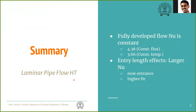To summarize laminar pipe flow heat transfer: in the fully developed region the Nusselt number is constant — 4.36 for constant surface heat flux and 3.66 for constant surface temperature. In the entry length region, the Nusselt number is generally larger, for two reasons: near the entrance the boundary layer is smaller, and at higher Peclet number convection dominates, also producing a smaller boundary layer and therefore a larger Nusselt number. Thank you.